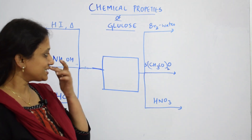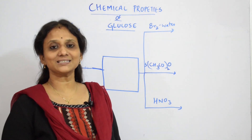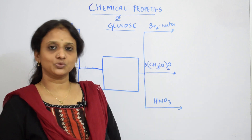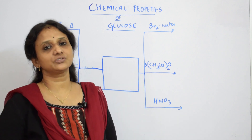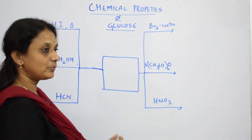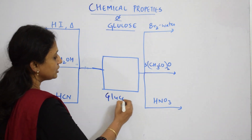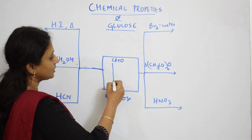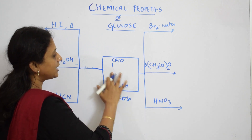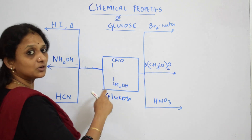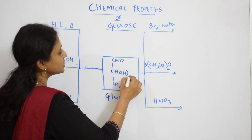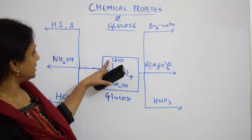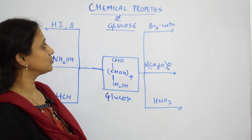When I speak about chemical properties, first let us recall the glucose structure — six carbon atoms. I have written aldehyde at the first carbon, CH2OH at the last carbon, and all the hydrogens and hydroxyl groups on both sides. Now when I condense the formula of glucose, I write CHO at the first carbon, CH2OH at the last carbon, and CHOH taken four times in between. This is the condensed formula of glucose.